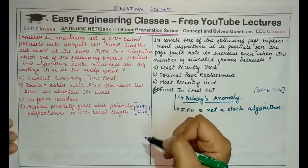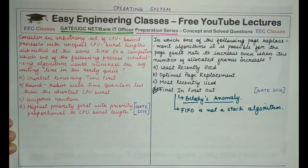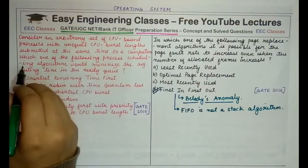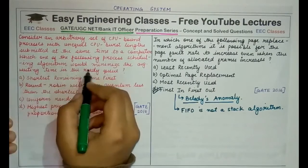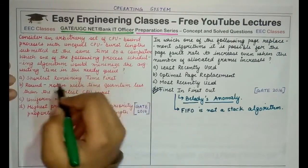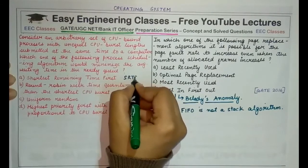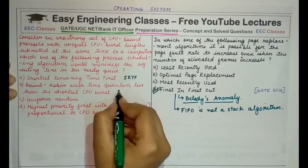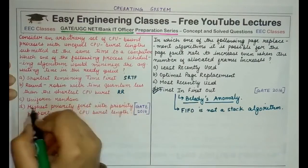Coming back to our first question: consider an arbitrary set of CPU-bound processes with unequal CPU burst lengths submitted at the same time to a computer system. Which one of the following process scheduling algorithms would minimize the average waiting time in the ready queue? The options are Shortest Remaining Time First (SRTF), Round Robin (RR) with time quantum less than the shortest CPU burst length, and others.